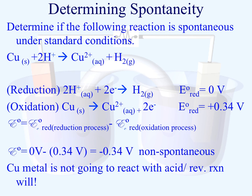A negative value indicates a non-spontaneous process, which tells us that this copper metal is not going to react with acid (H⁺) to give us Cu²⁺ ion and H₂. However, the reverse process — Cu²⁺ in the presence of hydrogen — will give us copper and acid in solution.